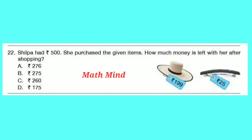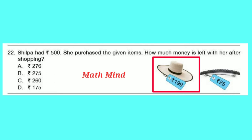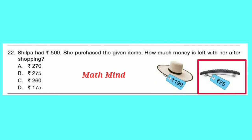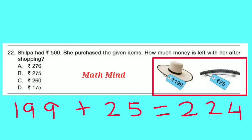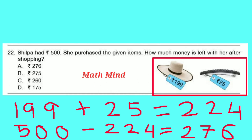Question number 22: Selva had 500 rupees and purchased the given items. How much money is left with her after shopping? Cost of the cap: 199 rupees. Cost of a hair clip: 25 rupees. Total cost: 199 + 25 = 224 rupees. Money left: 500 − 224 = 276 rupees. Correct option is A.